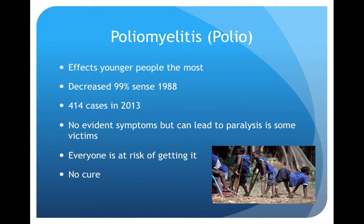Polio had outbreaks and epidemics a long time ago, but it has decreased 99% since 1988. It affects people under 5 mostly, and there were 414 cases in 2013. There are no obvious symptoms at first, but it can lead to paralysis in serious cases. As long as one case exists in the world, everyone is at risk of getting it, and since there's no cure, it puts a lot of people at risk.